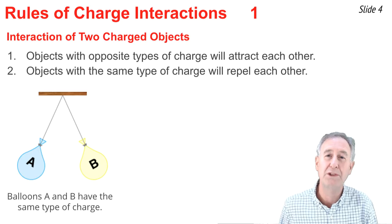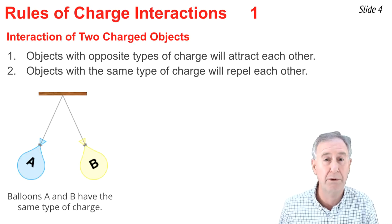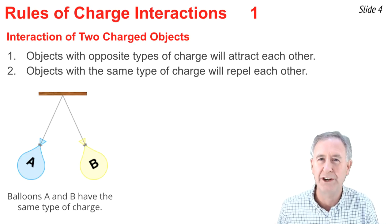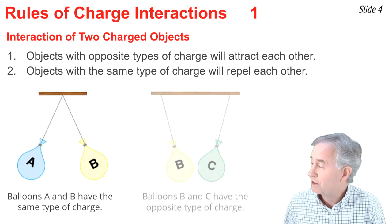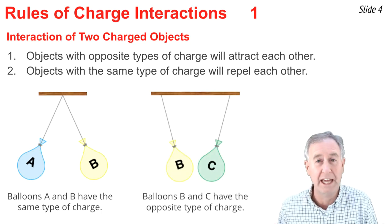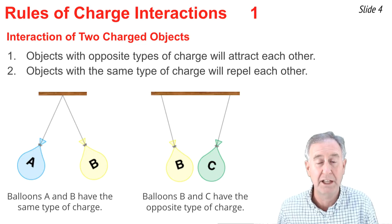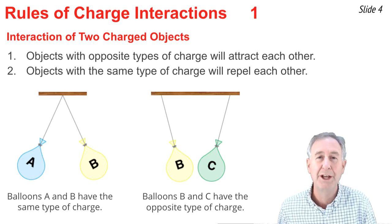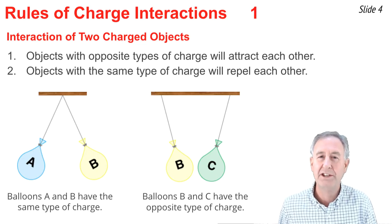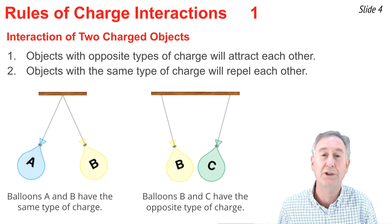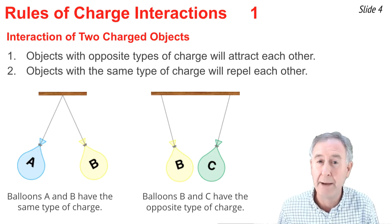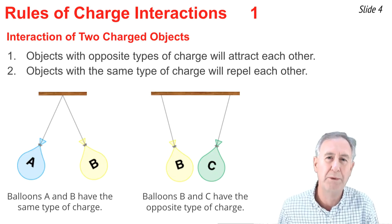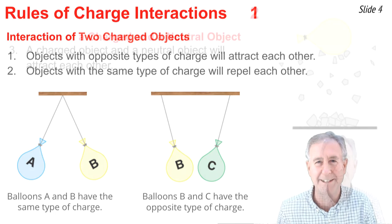This tells us that balloons A and B have the same type of charge. We don't know if they are both positive or both negative, but we do know that they're both charged with the same type of charge. This diagram shows balloons B and C hanging from the ceiling, drawing near to one another — they're attracting each other. This tells us that if these two objects are charged, they're charged with the opposite type of charge: one would be positive and the other would be negative.